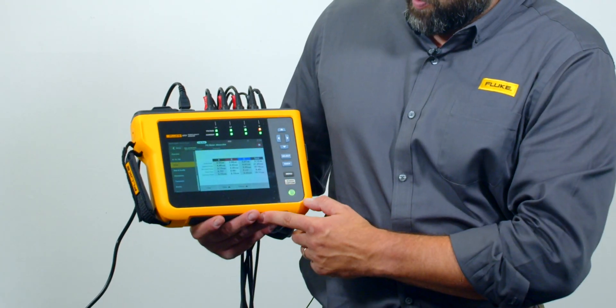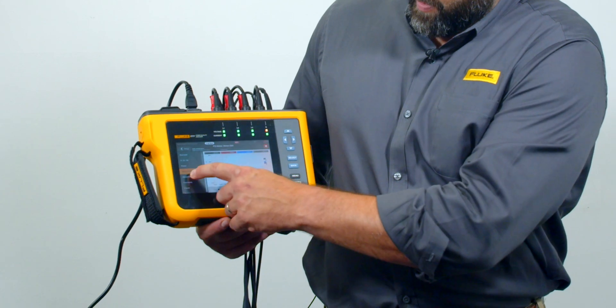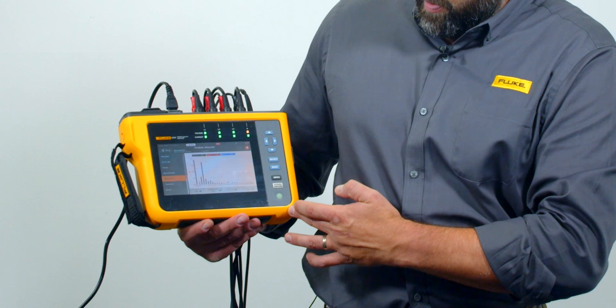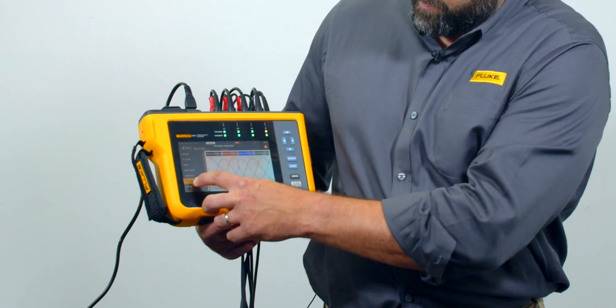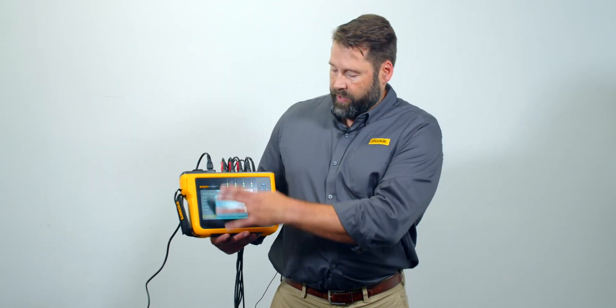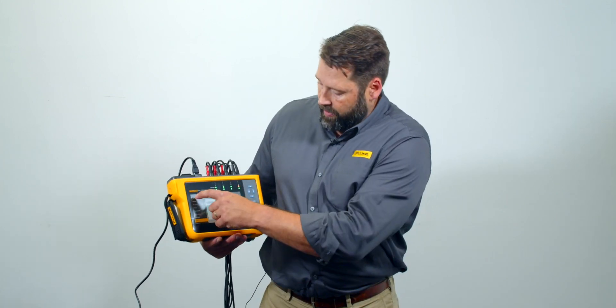I can look at dips and swells. I can look at harmonics. I can look at total harmonic distortion all the way up to the 50th harmonic. You can look at transients. This will capture events as well so if there's anything like a dip or a swell or an inrush this is going to capture it for you and it's going to date and time stamp it. It's going to put it into this table here so you can look at this.